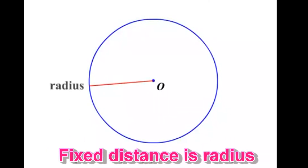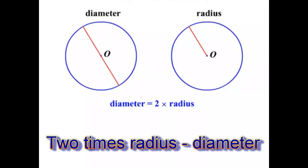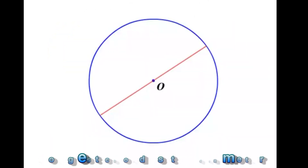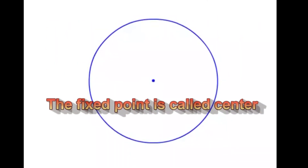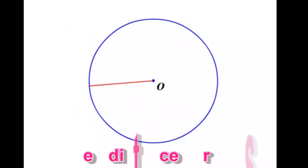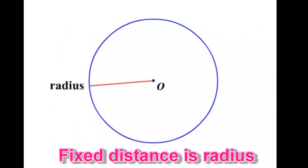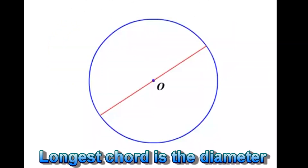The fixed point is called the center and the fixed distance is called the radius. Twice the radius is the diameter. The longest chord is the diameter.